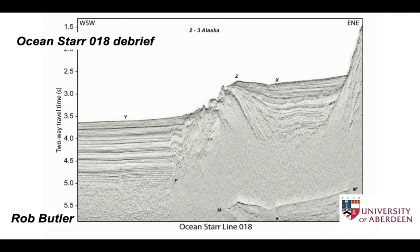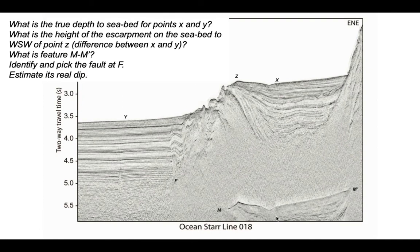This short presentation looks at the Ocean Star 0.18 seismic profile acquired by USGS offshore Alaska. We can use it to answer the following questions: we can estimate the water depth at various points across the profile, particularly X and Y, and therefore work out the height difference between these two places down the escarpment that runs down from point Z on the profile.